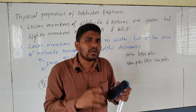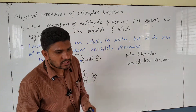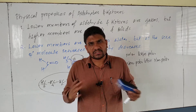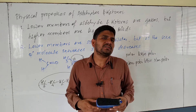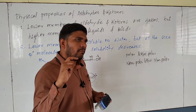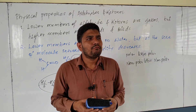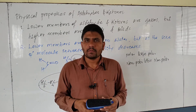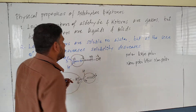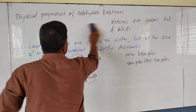This is a very important point. If they ask you why lower members of aldehydes are soluble in water, the answer is: lower members of aldehydes and ketones are soluble in water because they form a hydrogen bond with water. You also need to draw the diagram showing how hydrogen bonding forms with water.